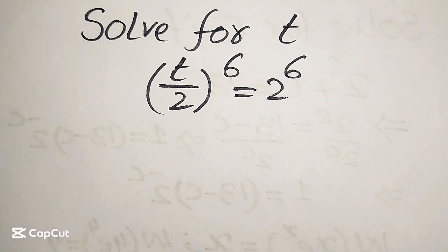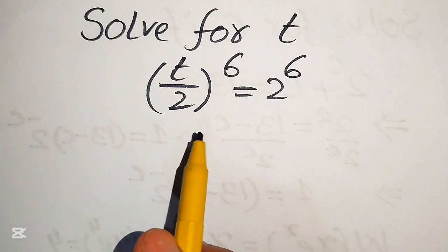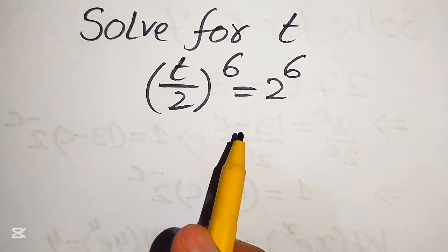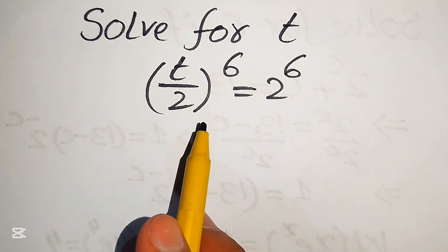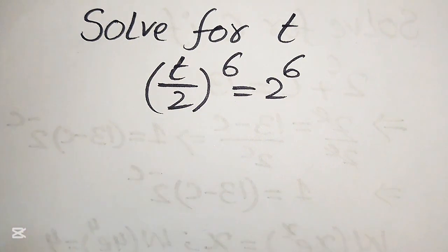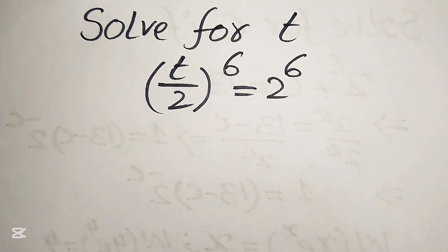Hello everyone, welcome to solve this nice math algebra problem. We have (t/2) to the power of 6 equals 2 to the power of 6, and we solve this problem for the values of t. This is a 6th-order equation, which means it has 6 solutions or 6 roots.